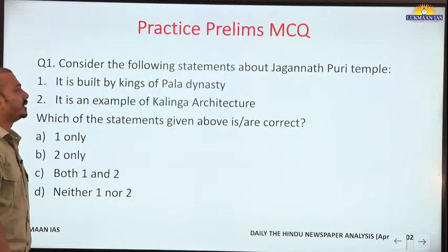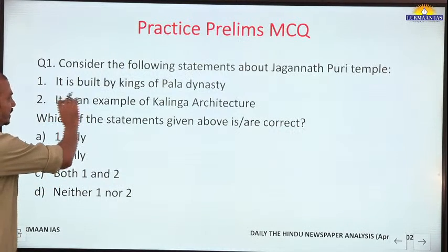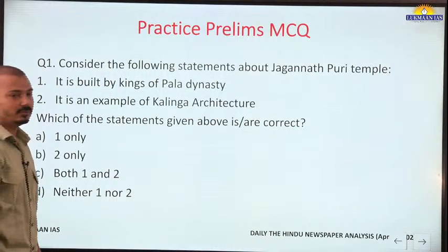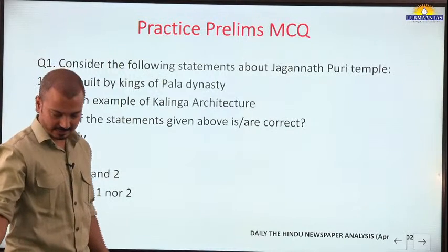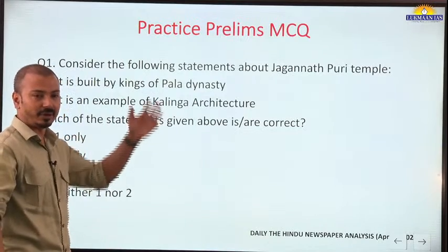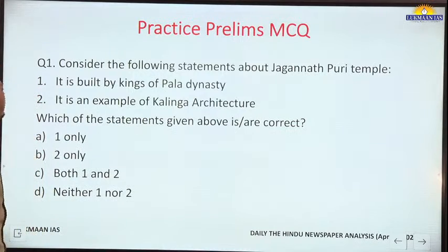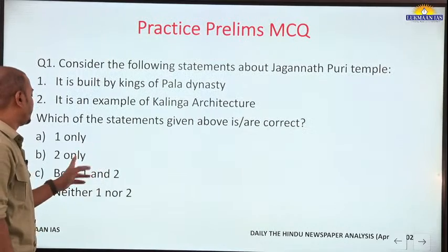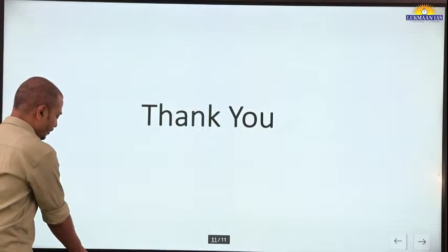Practice question on Jagannath Puri temple - find the correct statements. Statement: it is built by kings of Pala dynasty - this is incorrect; it is built by kings of the Ganga dynasty. The Pala dynasty was from Bengal and Bihar. Statement: it is an example of Kalinga architecture - this is correct. So the answer is B only, or two only.